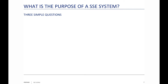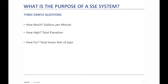There are three very simple questions you have to ask: How much, meaning gallons per minute? How high, meaning total elevation? And how far, meaning your total linear feet of pipe, from which you can calculate your friction loss. Those are the three questions. If you can answer those three questions, you're ready to go.